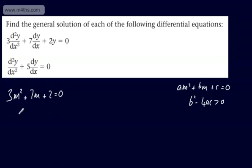That looks like it will factor. What are we going to have? 3m plus 1 and then m plus 2 is equal to zero. So m will be equal to negative 1 third or m will be equal to negative 2.